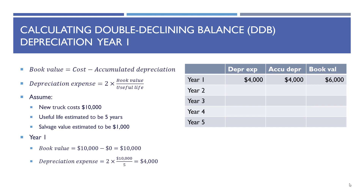Double declining balance is a little different. Again, book value equals cost minus accumulated depreciation. Depreciation expense using double declining balance (DDB) is equal to two times the book value divided by the useful life. If you're studying for a test, you really want to know this formula. Assume the new truck costs $10,000, useful life is five years, and salvage value is $1,000 — the same example as before with straight line.